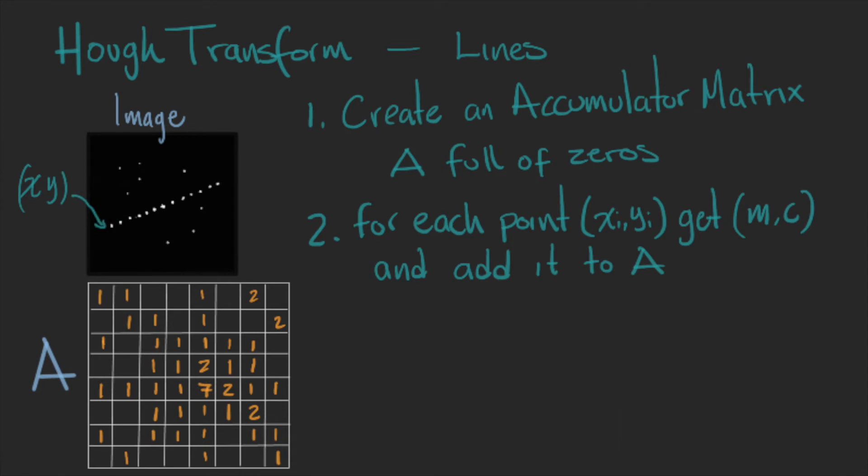As you can see, the intersecting points in the accumulator will keep growing with each new point, while the rest of the cells of the matrix will be either zero or they will have a low value.